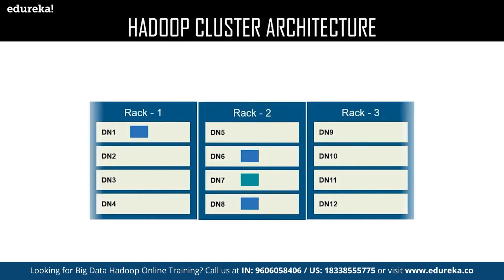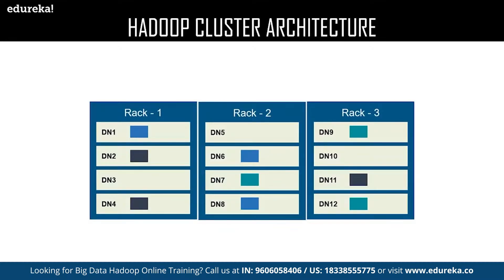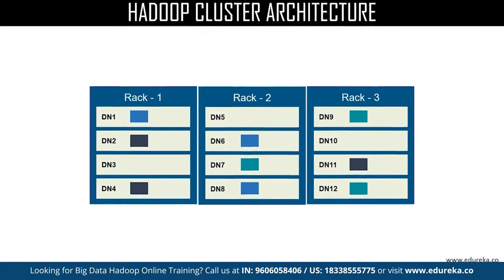Now let us deal with a different block. We have a new block in Rack 2, DataNode 7. Rack 2 is the local rack for the data block stored in DataNode 7. The replicas of DataNode 7 are stored in the remote rack which is Rack 3, in DataNode 9 and DataNode 12. We also have a new data block in DataNode 11, where Rack 3 is the local rack. The replicas of DataNode 11 are stored in the remote rack, which is Rack 1, in DataNode 2 and DataNode 4.